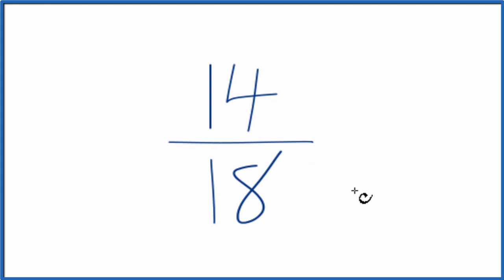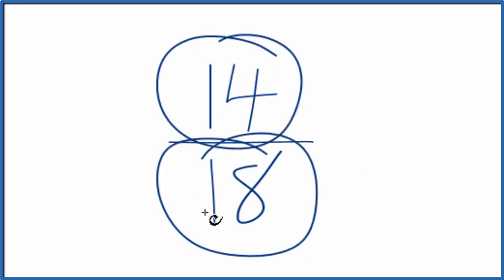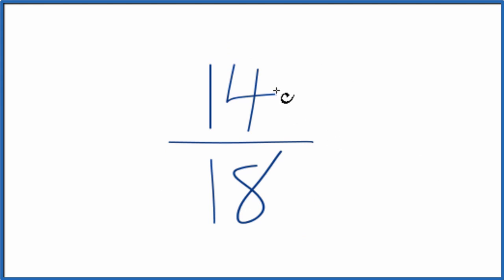So we need to find a common factor, something that goes into 14 and 18 evenly. Probably the easiest thing here to do is just divide 14 by 2 and 18 by 2, since they're both even numbers.